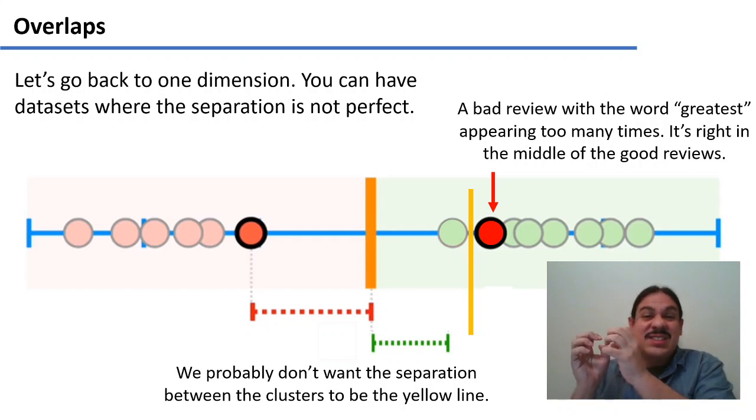And of course, this line is kind of silly. This line is not the maximum separation between the group. This line has very little separation between them. And really, if you get any green blobs that have different occurrences of the word greatest, they're going to be misclassified as belonging to the red group, for example.